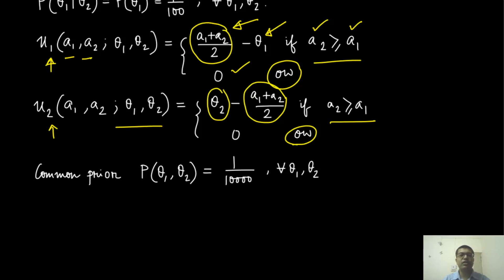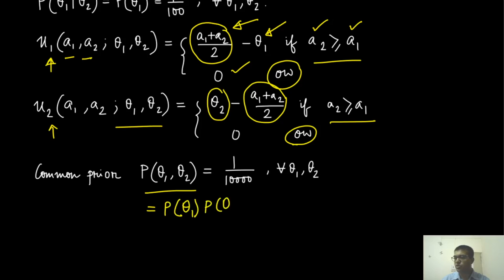The buyer is getting a good which it values at theta_2 — that is the maximum value at which it is willing to buy this object. The price determined was (A_1 + A_2) / 2. When the trade happens, this difference is the net payoff for player 2. Otherwise, it also gets 0 payoff. The common prior here has the distribution of theta_1 and theta_2 as 1/10,000, which in this case is independent, so you can write it as P(theta_1) times P(theta_2).